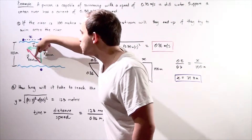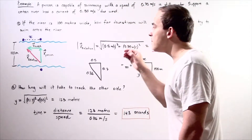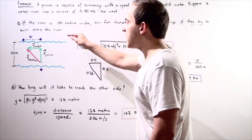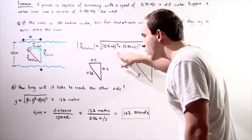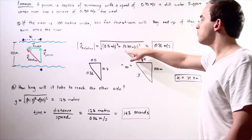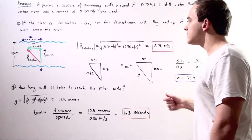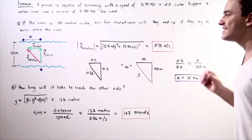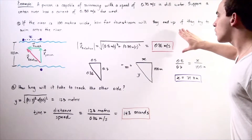We want to find the magnitude of this side shown in red. To find that magnitude of our relative velocity of the swimmer, we simply use our Pythagorean theorem. So, 0.5 meters per second squared plus 0.7 meters per second squared — we add up our squares and take the radical — and we get approximately 0.86 meters per second. This is our relative velocity of our person.